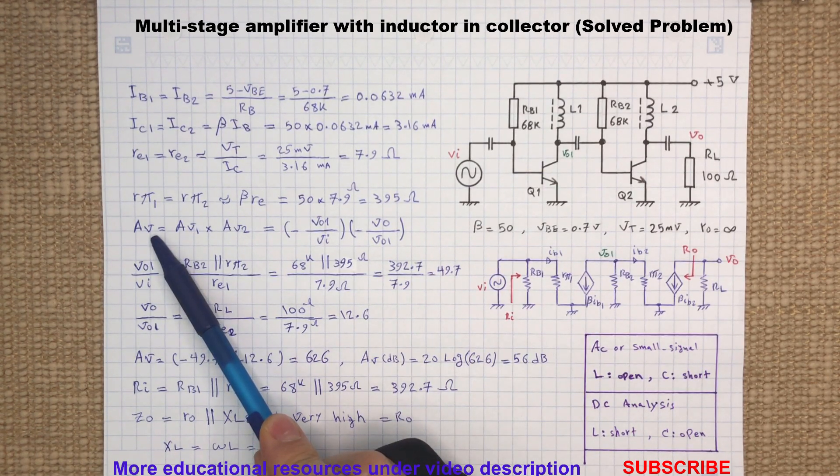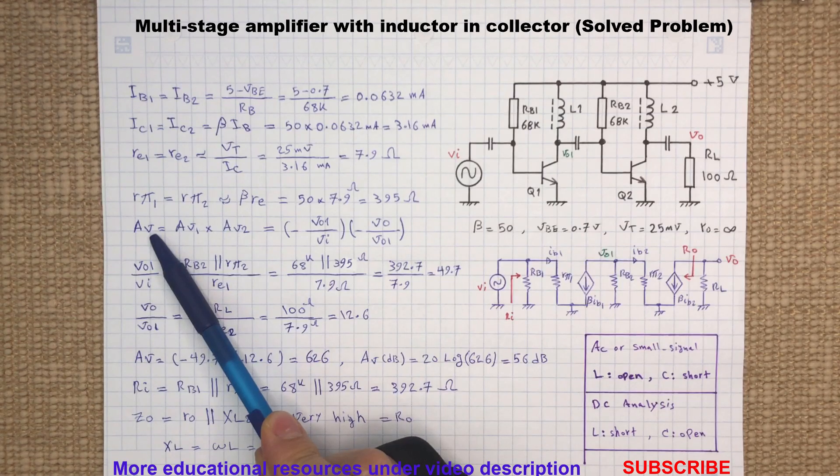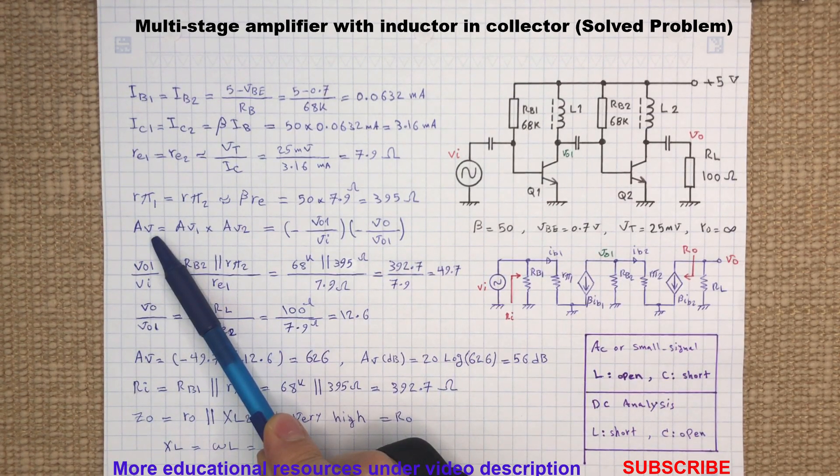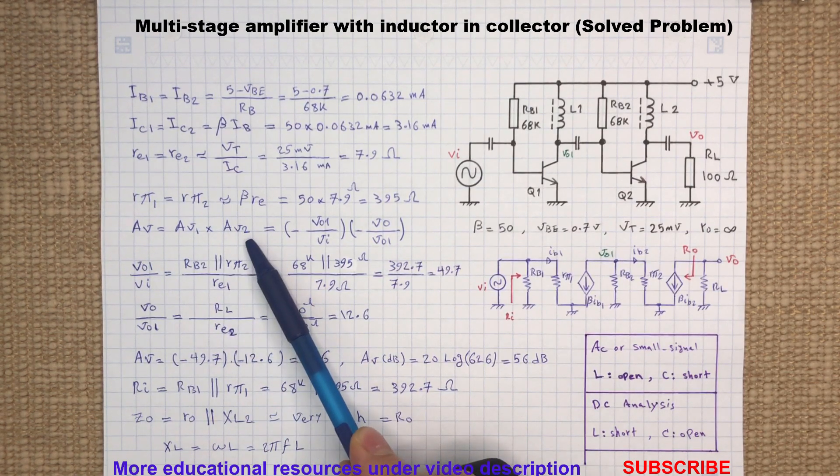To determine the voltage gain VO to VI for this multi-stage amplifier, we try to find the voltage gain for each stage separately, and then calculate the amplifier overall voltage gain.